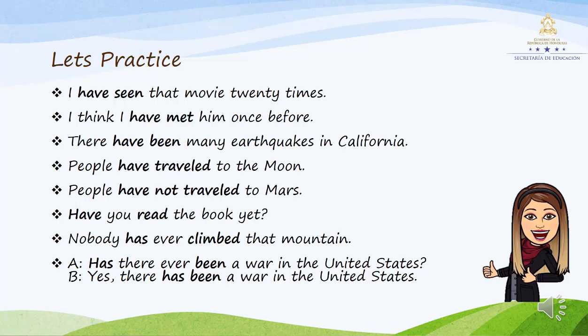Now let's practice. I have seen the movie twenty times. He visto esa película veinte veces. I think I have met him once before. Creo que lo he conocido una vez antes. There have been many earthquakes in California. Han habido muchos terremotos en California. People have traveled to the moon. La gente ha viajado a la luna. People have not traveled to Mars. La gente no ha viajado a Marte. Have you read the book yet? Ya has leído el libro. Nobody has ever climbed the mountain. Nadie ha escalado jamás esa montaña.